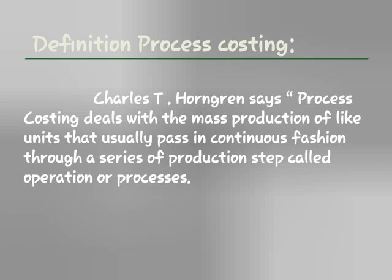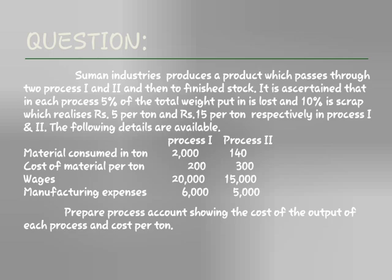Process Costing. Some industries produce a product which passes through two processes. It is ascertained that each process has 5% loss in weight and 10% normal scrap. Scrap value: Process 1 is Rs. 5 per unit, Process 2 is Rs. 15 per unit.